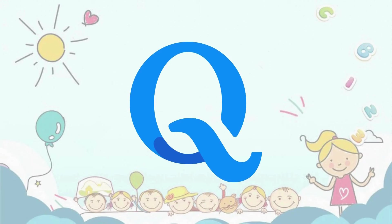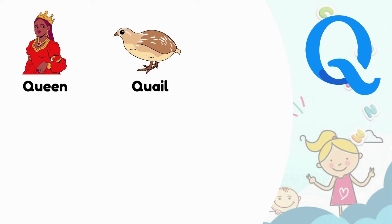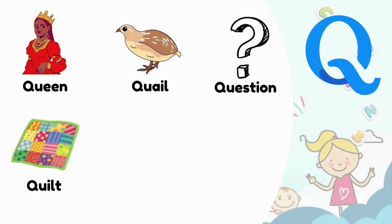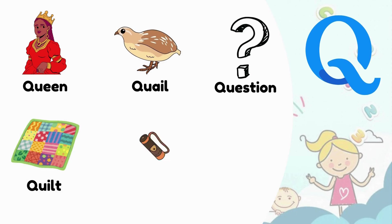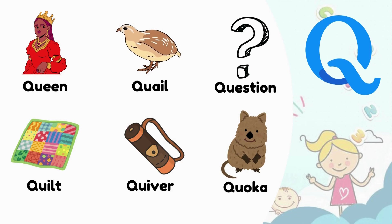Q. Q is for Queen. Q is for Quail. Q is for Question. Q is for Quilt. Q is for Quiver. Q is for Quokka.